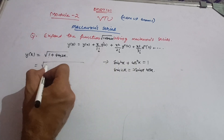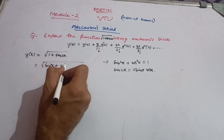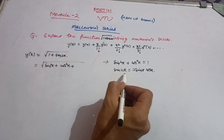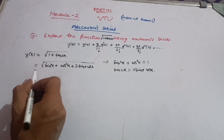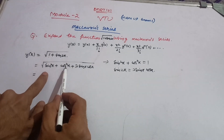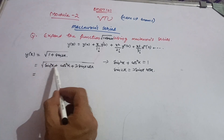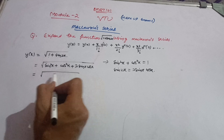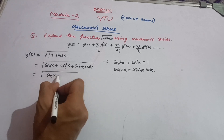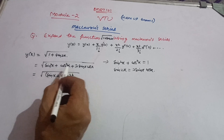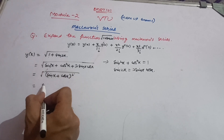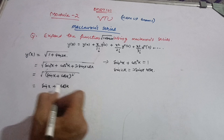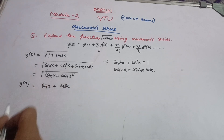Instead of 1, write sin²x + cos²x, and instead of sin 2x, write 2 sin x cos x. So the expression under the root becomes sin²x + cos²x + 2 sin x cos x. Recognizing the identity a² + b² + 2ab = (a+b)², this equals (sin x + cos x)². The square root and square cancel, giving y(x) = sin x + cos x.